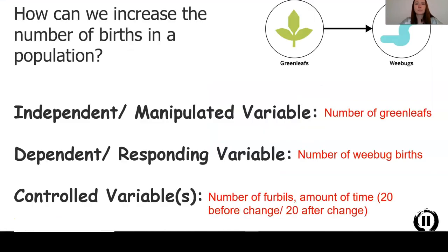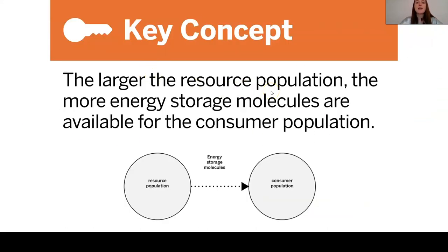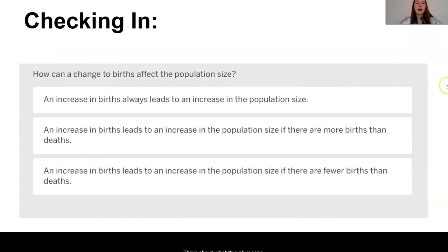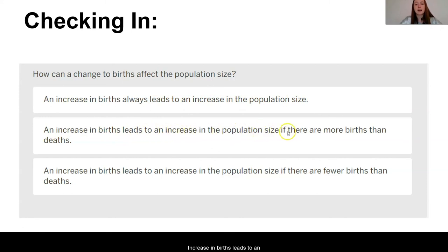What we can conclude is that when we increase the resource population, this causes there to be more energy storage molecules available for our consumer population. By increasing the population size of one group, you can affect the births in another group. Now think about what this all means — how can changing births affect population size? An increase in births leads to an increase in population size only if there are more births than deaths.